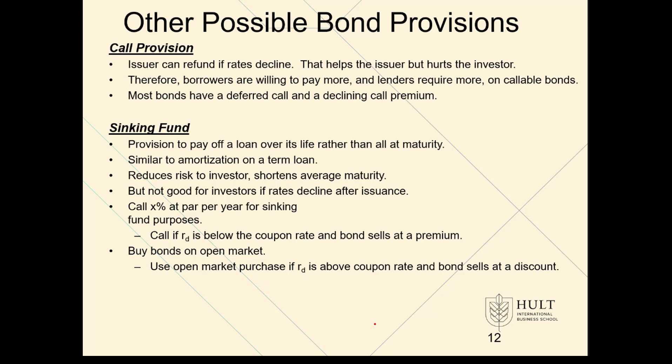Think of a sinking fund as a box on your table where you set aside money so that at the end of five years you don't have to come out of pocket for $100 million you haven't provided for. This is not a requirement in bonds, but it is an inducement — an attractive feature. If you're the buyer of the bond, you'd feel good if the issuer is setting aside money along the way, so it's not a big shock at year five when they need $100 million. This means the sinking fund is advantageous to the buyer and disadvantageous to the issuer, leading to a more attractive bond and a higher price.